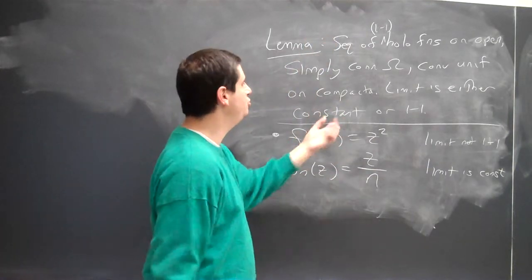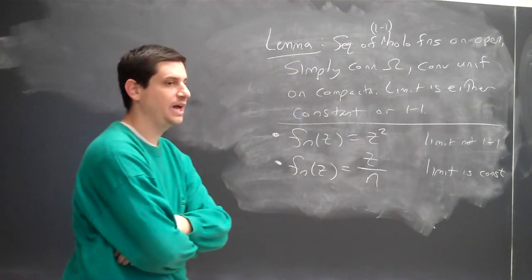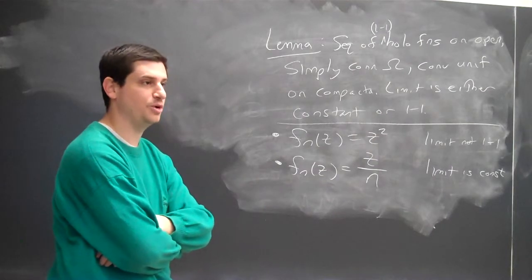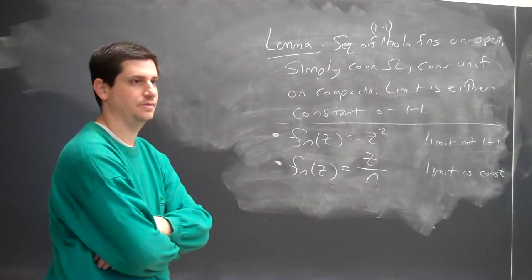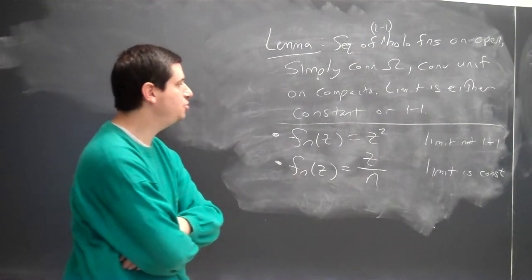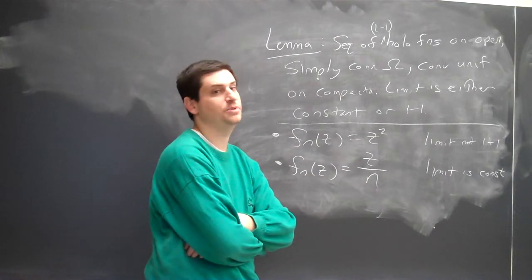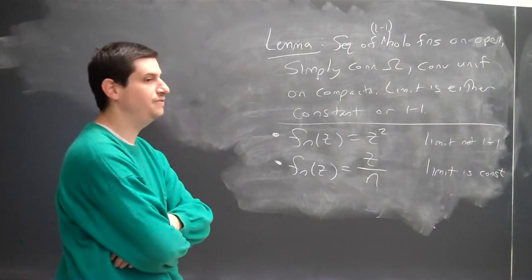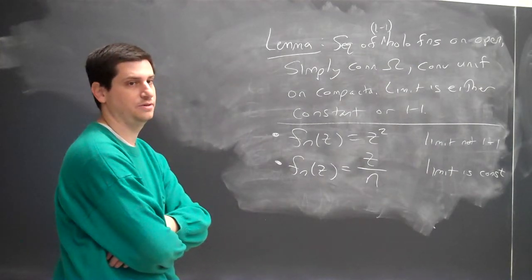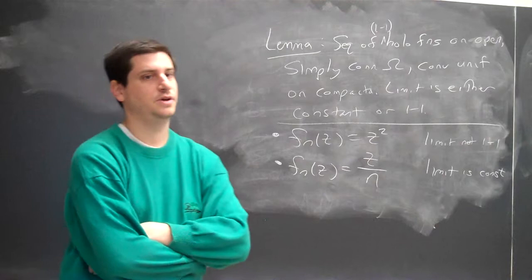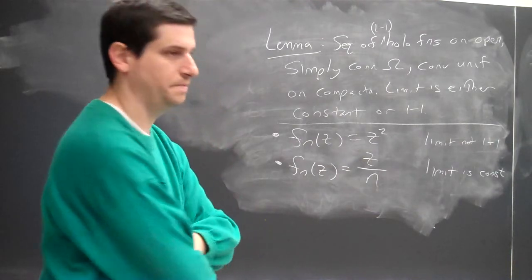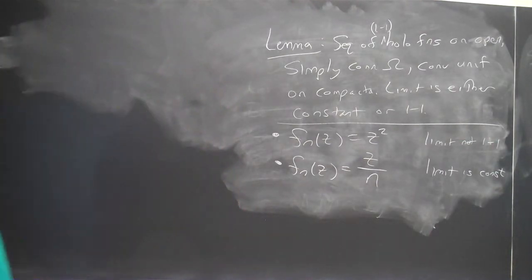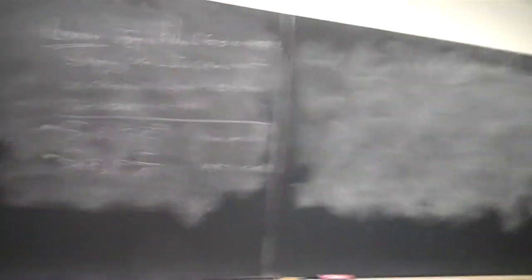So, when we look at this lemma, there's no way we can avoid having constant as one of the possible outcomes. So, the question is, what do we need in order for it not to be constant? If we have two different values that are hit, then we're okay. Then, it would have to be one to one. So, the question is now, how do we prove this result?